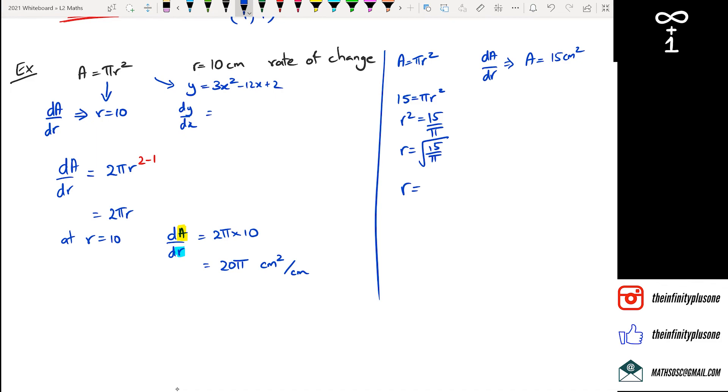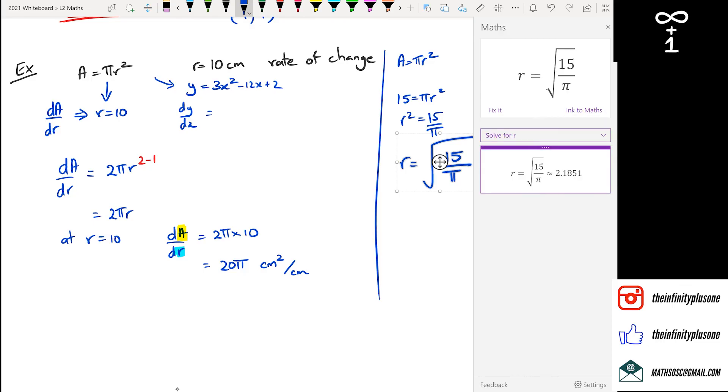So I can just use this calculator. So r is equal to square root of 15 divided by π. I'm gonna see if this actually works or am I gonna get a fail. All right, it does work so far. So r is roughly 2.1851.